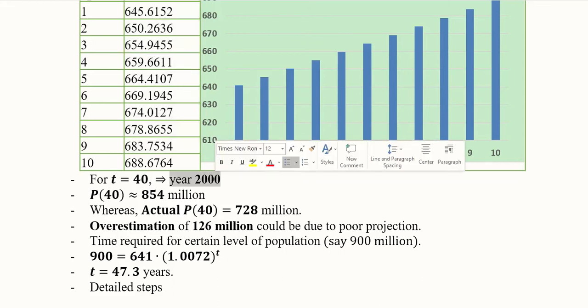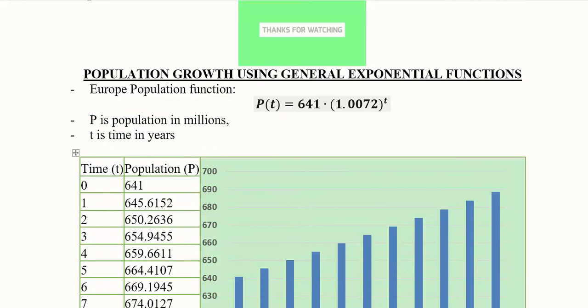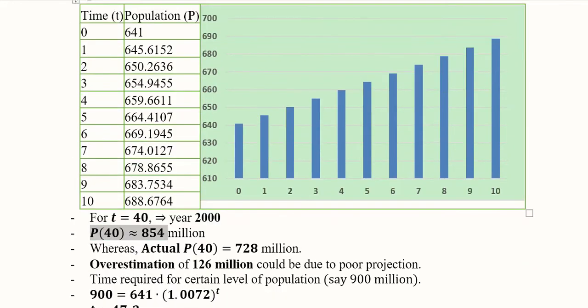The population in the year 2000, what would it be? The guess as per the equation would be this: if we put 40 here in this equation, we will get a value which will be 854 million.